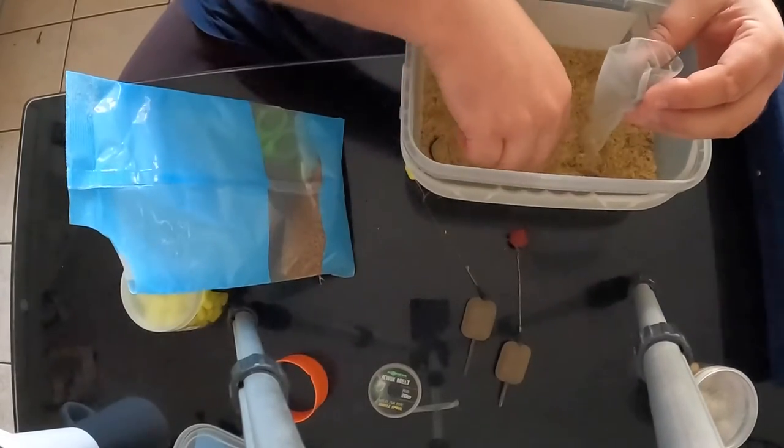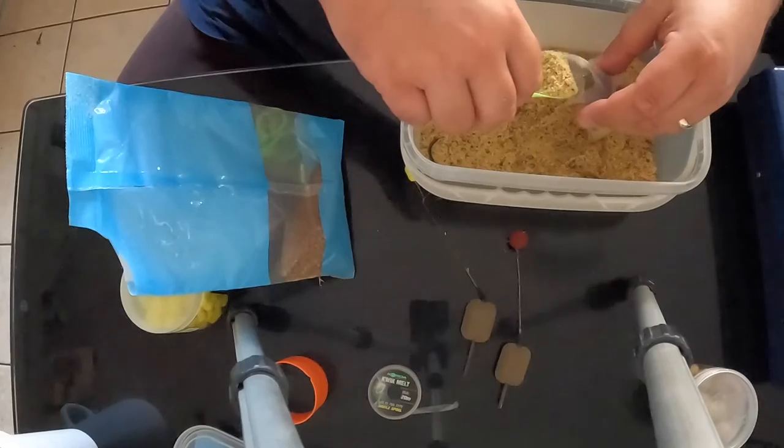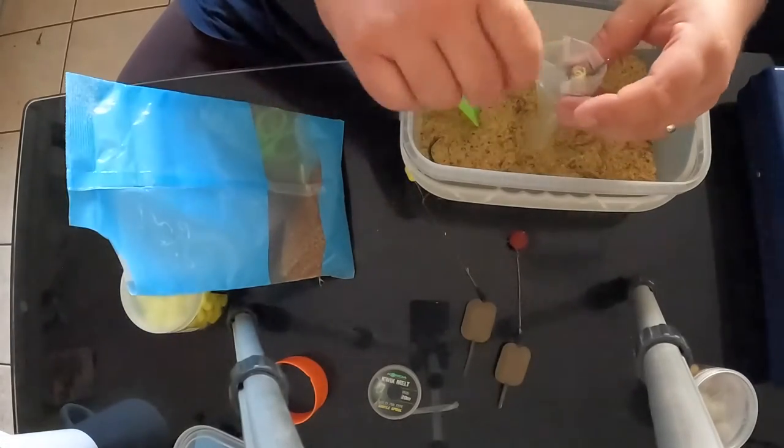Once we've got this hook bait in the corner of the bag and we're happy with it, we'll just put another small scoop of bag mix over the top to cover the hook bait and hook.